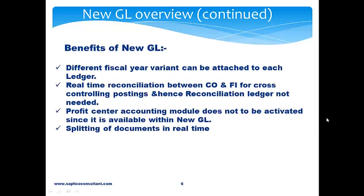What are the benefits of New GL? A different fiscal year variant can be attached to each ledger. For example, if there is a requirement for a company code where group reporting is January to December and tax reporting is April to March, in this case we can use a different fiscal year variant and attach it to a different ledger.